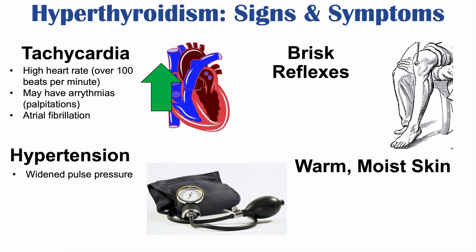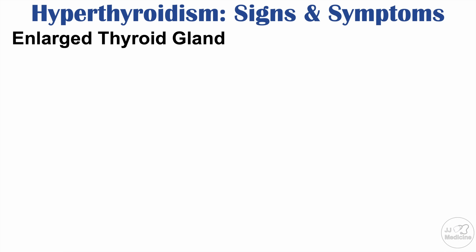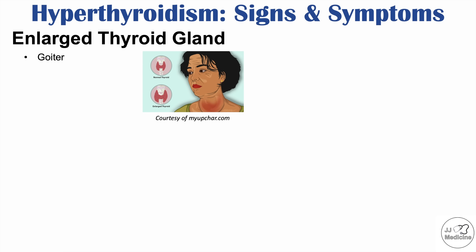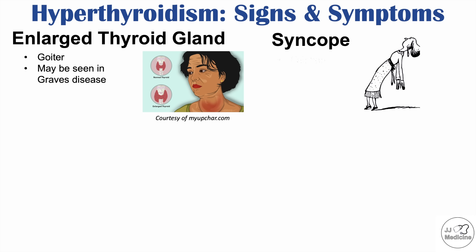Another sign of hyperthyroidism is warm and moist skin — unlike the dry skin seen in hypothyroidism. An enlarged thyroid gland (goiter) may also be seen, more specifically in Graves' disease. Syncope, or fainting, can also occur, possibly related to atrial fibrillation or arrhythmia caused by the increased heart rate.